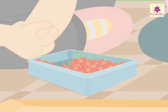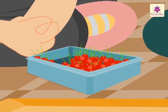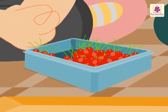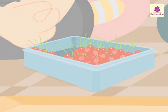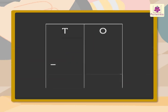Now, instead of removing the cherries, we can subtract the numbers directly. Let's see how. Write the numbers 68 and 16 in the place value chart, that is in the ones and tens columns. Now first subtract the number six from eight in the ones column — we get the number two. Write the answer in the ones column.